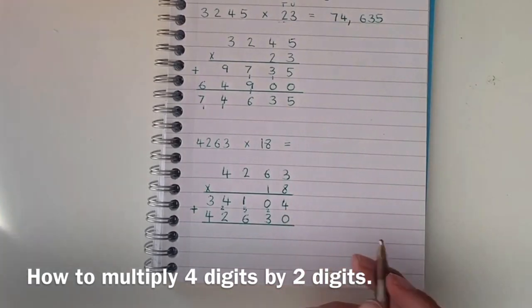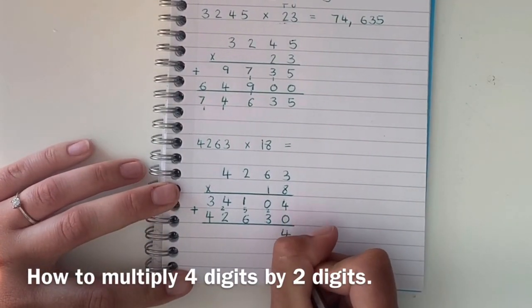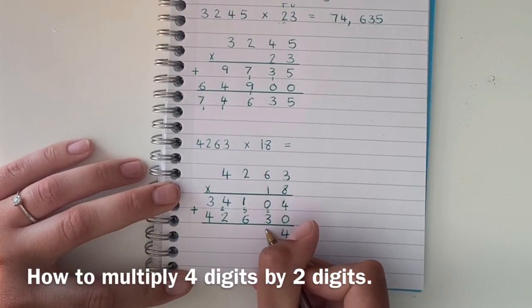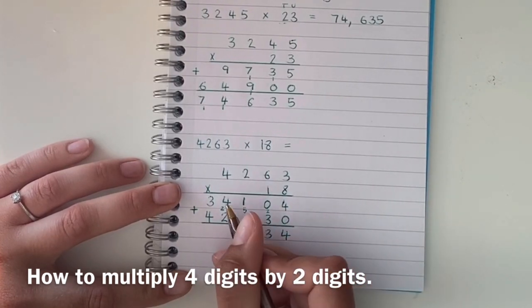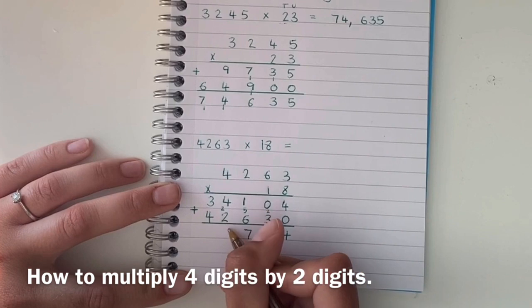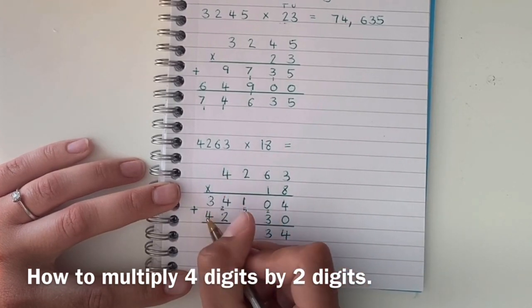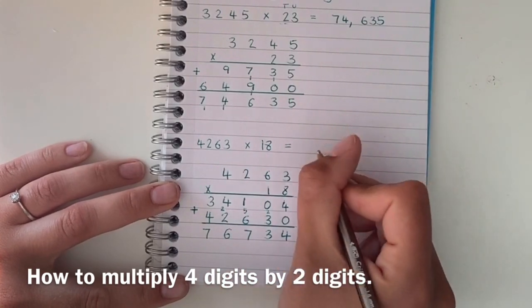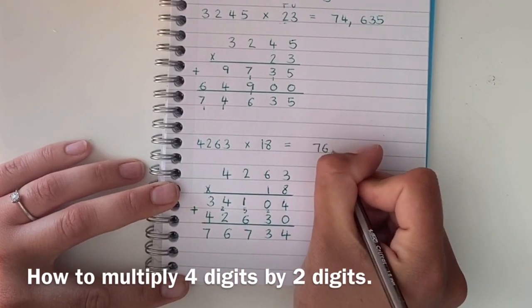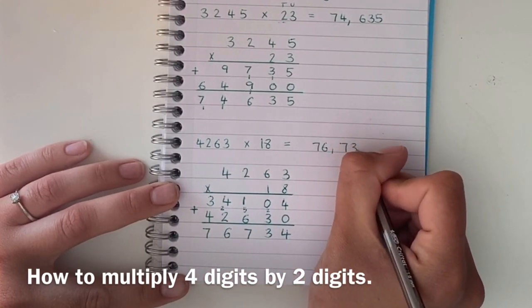So 4 add 0 is 4, 0 add 3 is 3, 1 add 6 is 7, 4 add 2 is 6 and 3 add 4 is 7. So my answer to this number is 76,734.